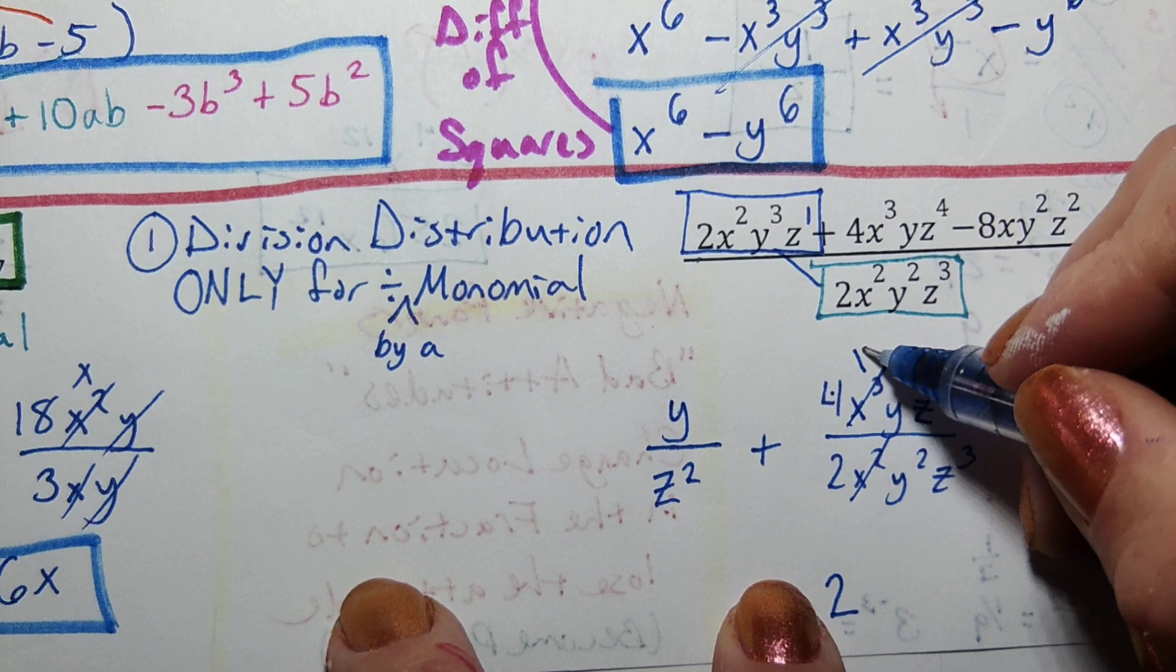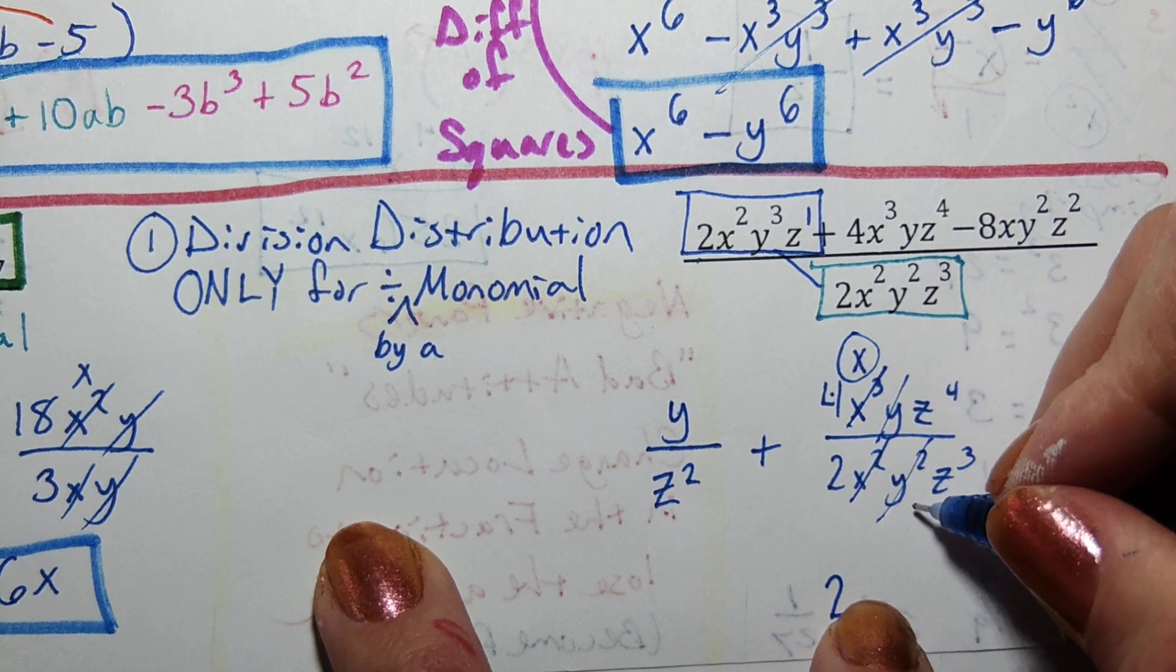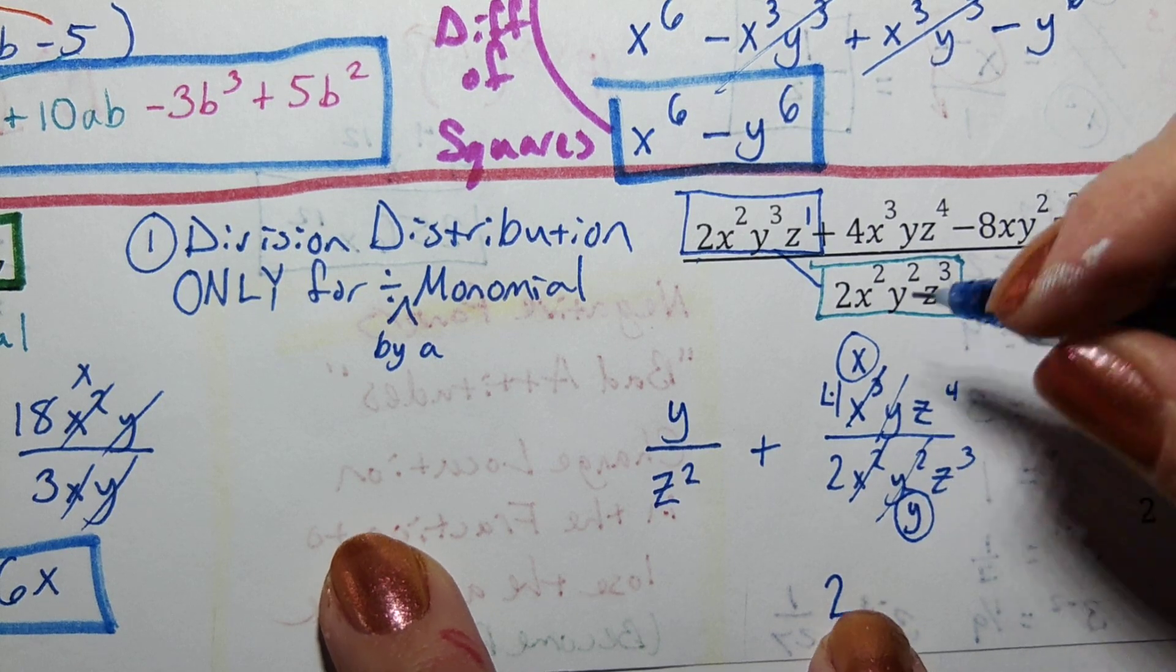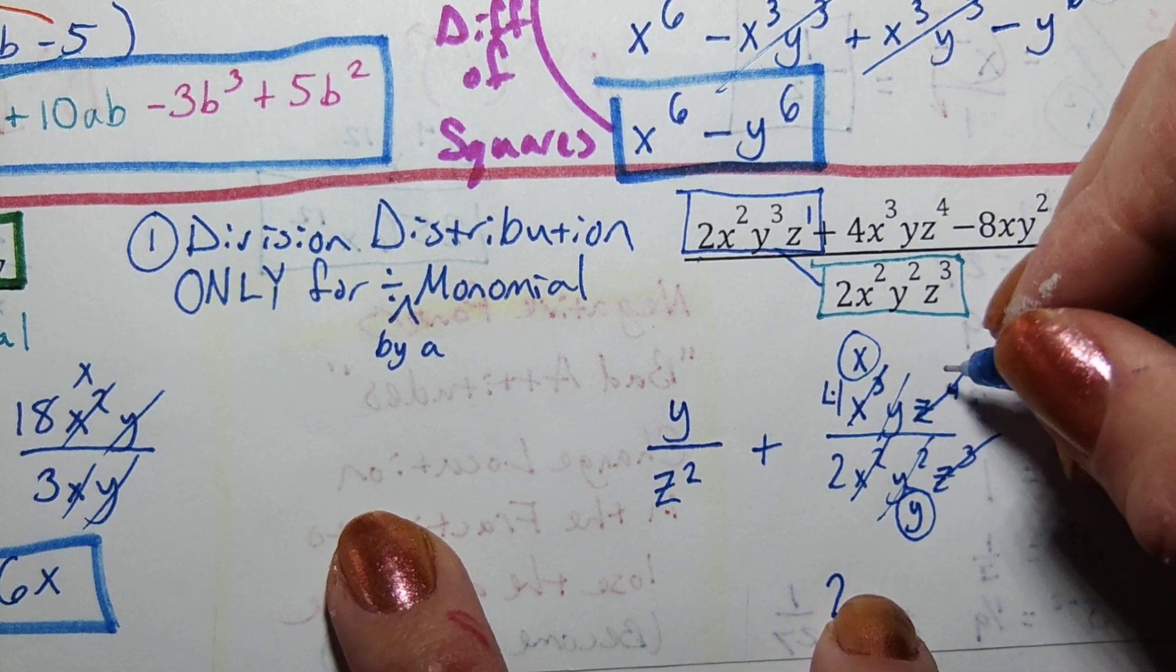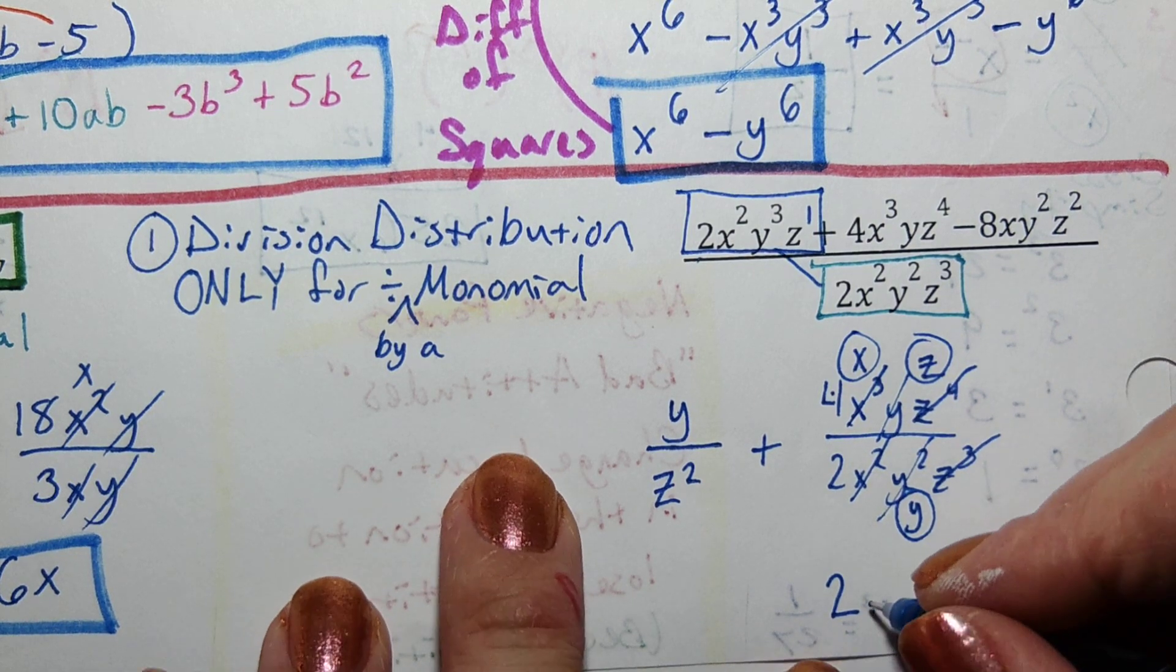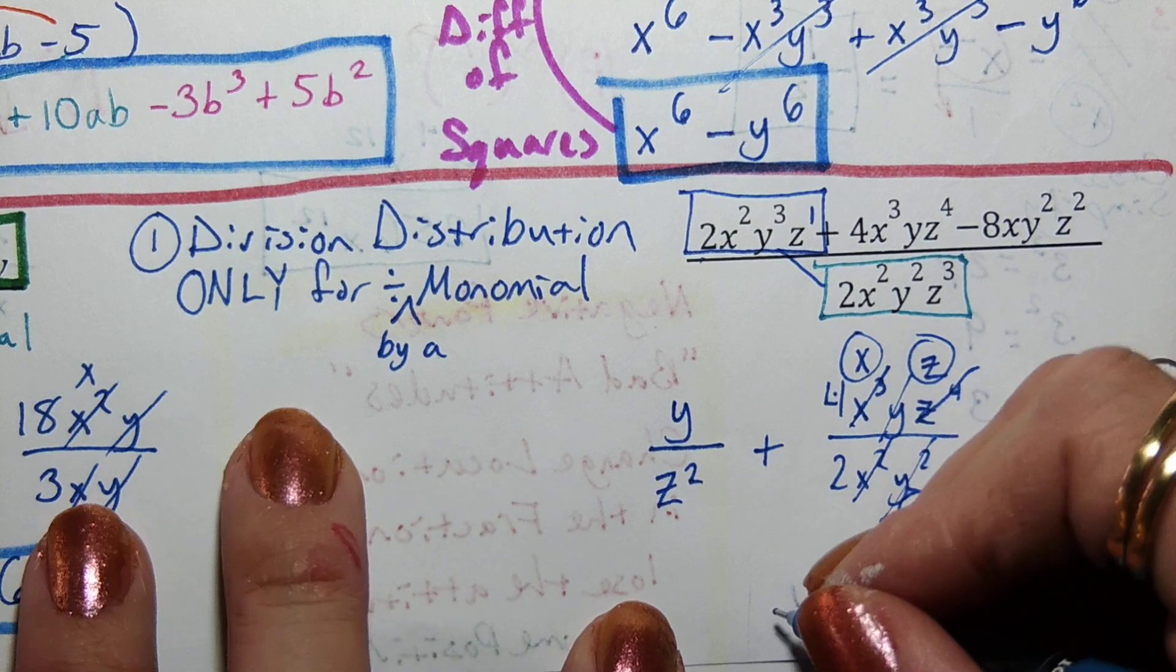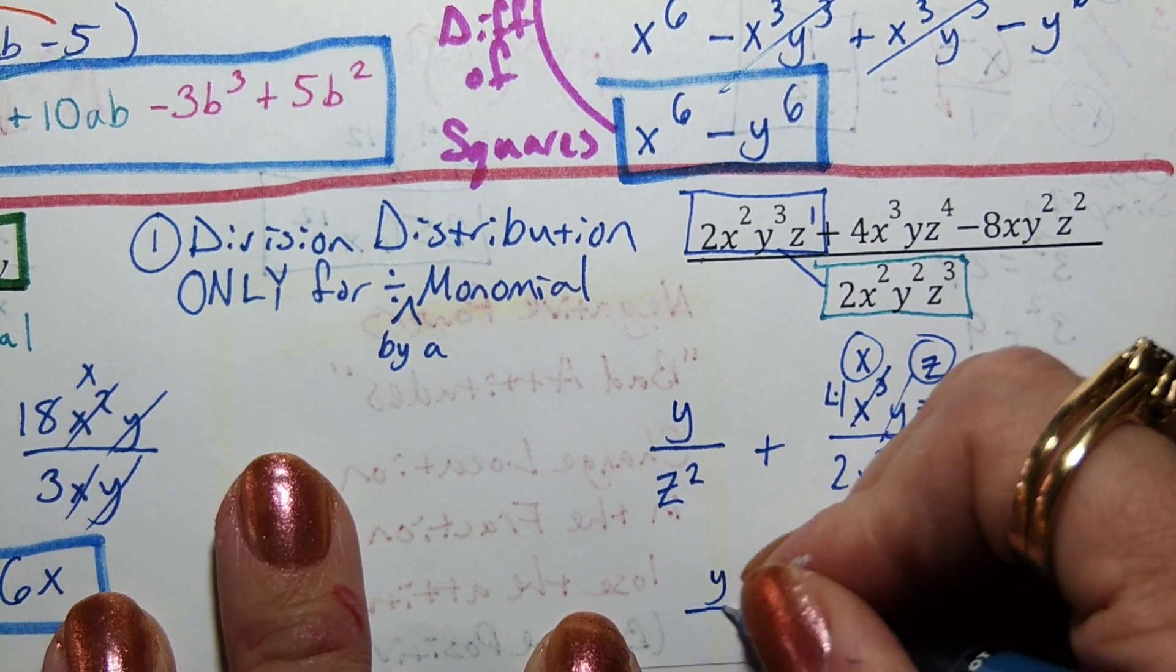So 4 divided by 2 is 2. x^3 over x^2 leaves me with an x. y divided by y^2, one y on the bottom. So I'm really just taking out GCFs of those variables. And what I'm left with then is 2xz on the top over y on the bottom. Let's go ahead and bring down our work over here.